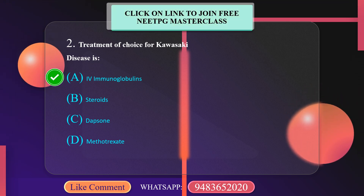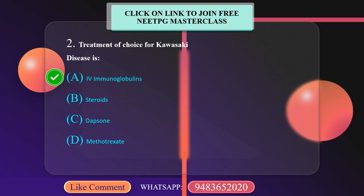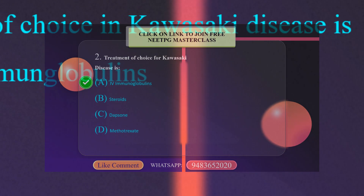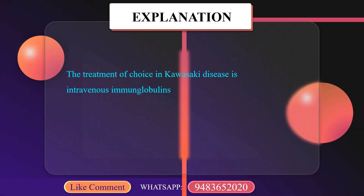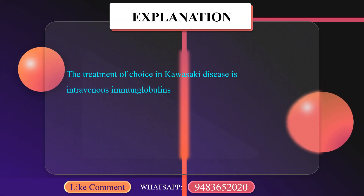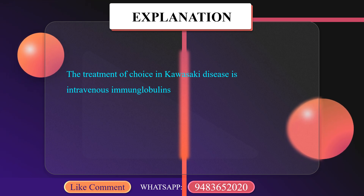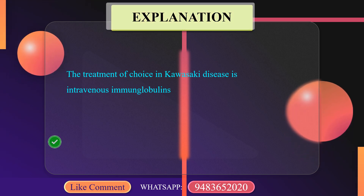The correct option here is IV immunoglobulin. The treatment of choice for Kawasaki disease is intravenous immunoglobulin — IV immunoglobulin.